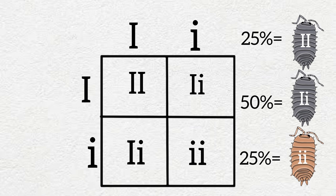And the remaining 25% of the offspring will have two recessive alleles making them homozygous recessive with our desired orange carapace.